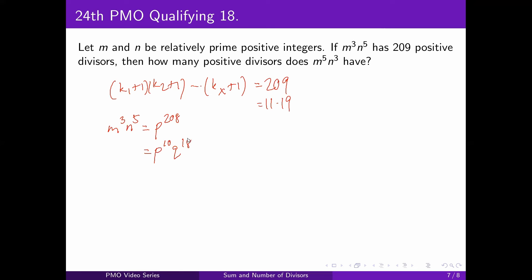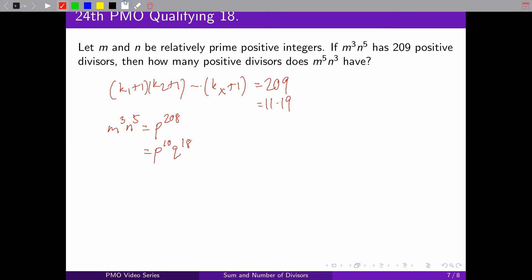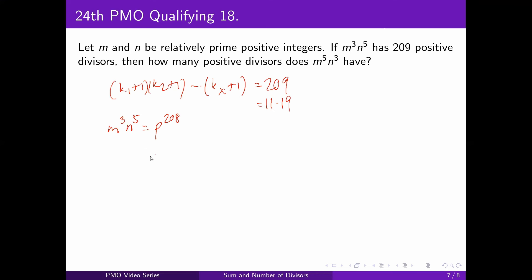You can easily check that the first case is impossible. In Case 1, if it's P raised to 208 — since M and N don't share any prime factors, it's impossible for P to divide both M and N. The only sub-cases are M equals 1 and N raised to 5 equals P raised to 208, or N equals 1 and M raised to 3 equals P raised to 208. Both are impossible since you won't get integer solutions. So there are no solutions in this case.